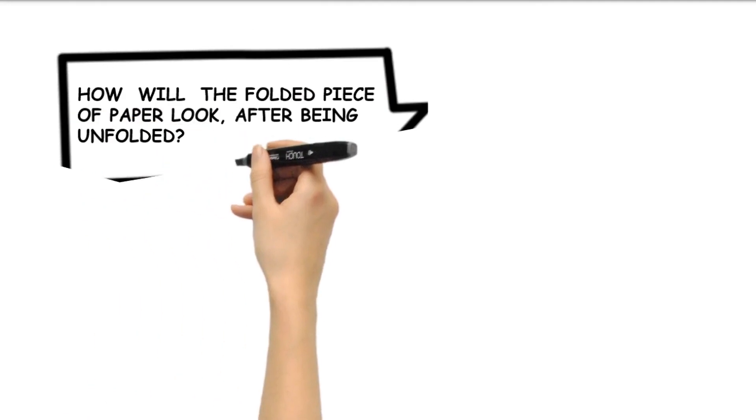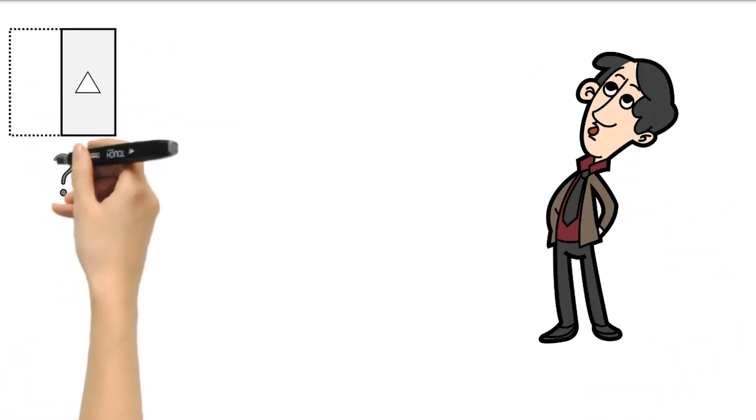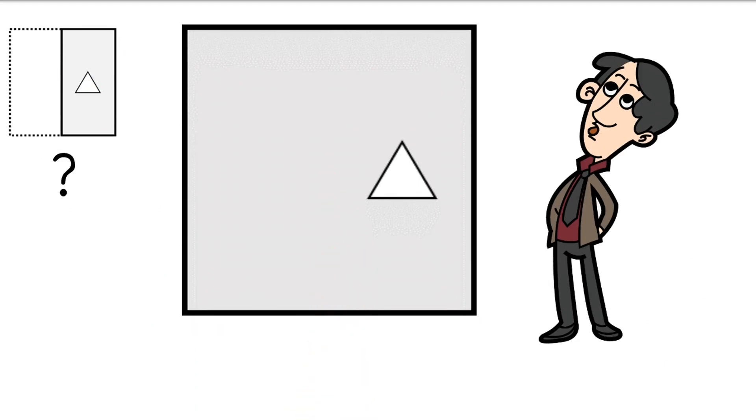How will the folded piece of the paper look after being unfolded? When the paper is unfolded, the holes will mirror on the left and right sides of the sheet.